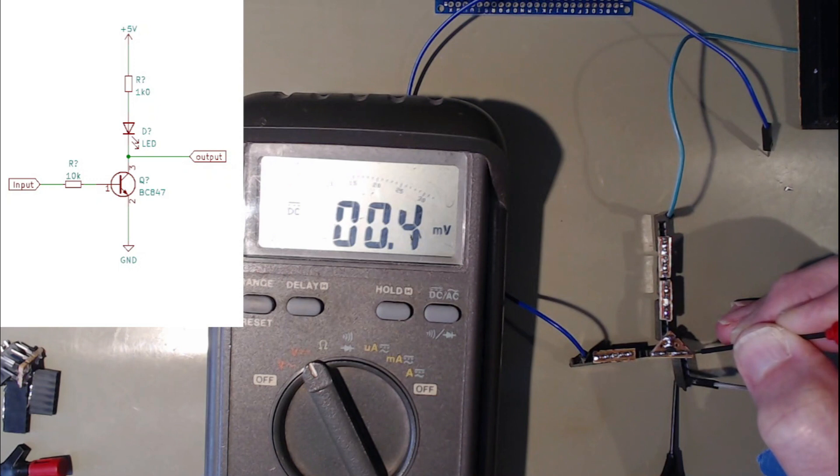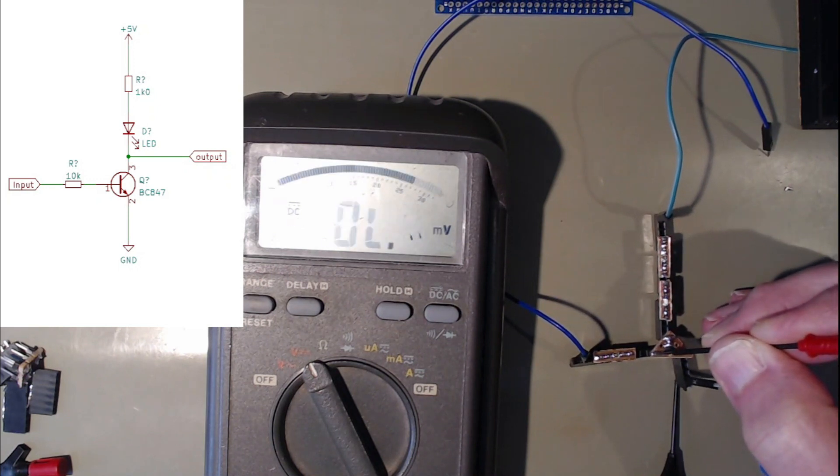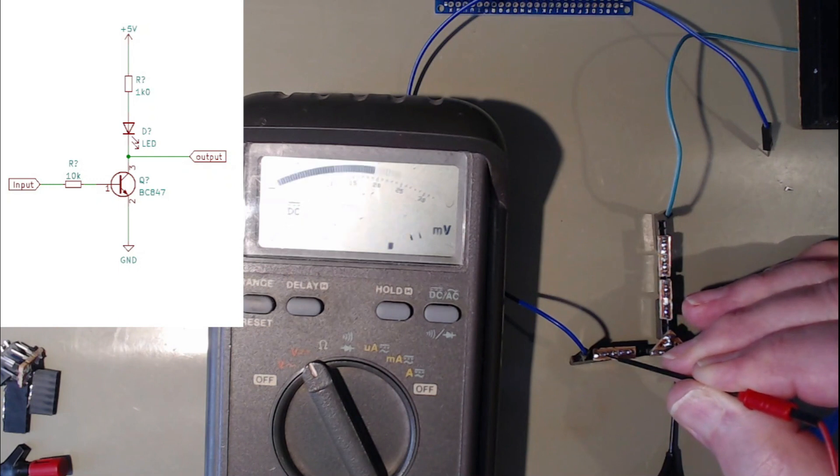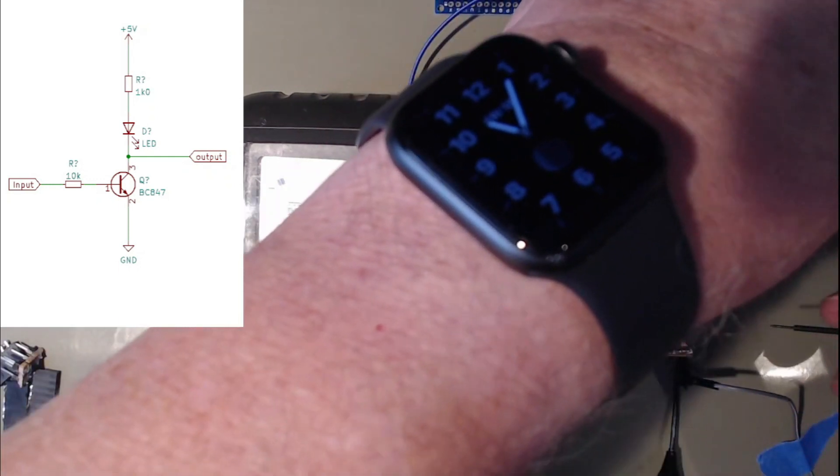Emitter, we have nothing on the base. Now we have it hunting around and that's just mains pick up in my hand as the other video showed. And then on the base, this side it's hunting again because we've got noise and pick up in my hand.